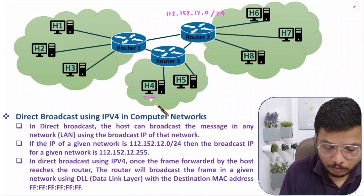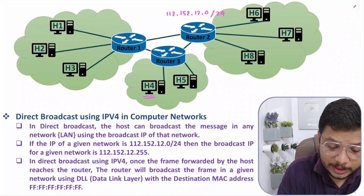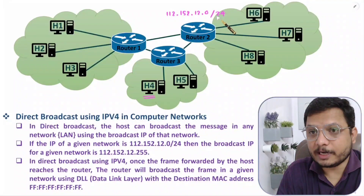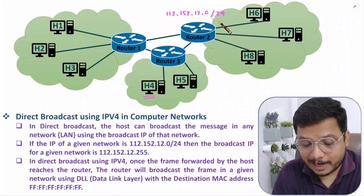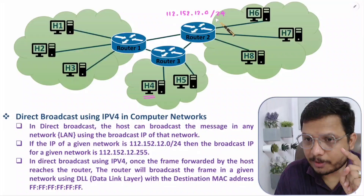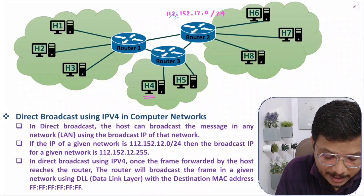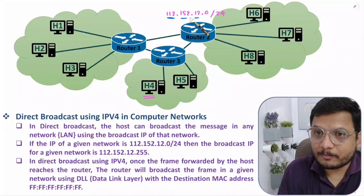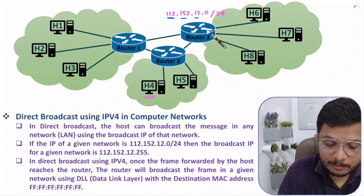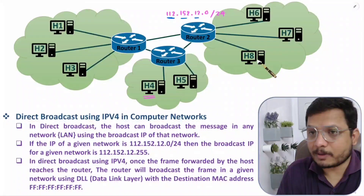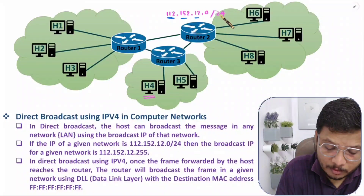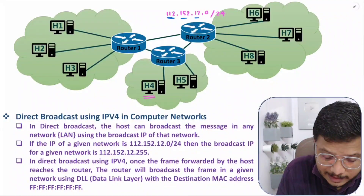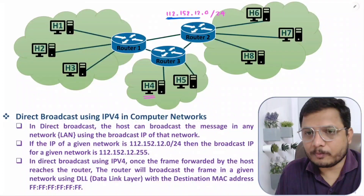Let us say host 4 wants to do broadcast in this network. First you need to understand the meaning of this IP. The /24 means the mask size is 24 bits. The IP address has a first octet of 8 bits, a second octet of 8 bits, and a third octet of 8 bits — totaling 24 bits. The last octet is 0, which indicates this is the network IP of this network. So /24 is the size of the mask.